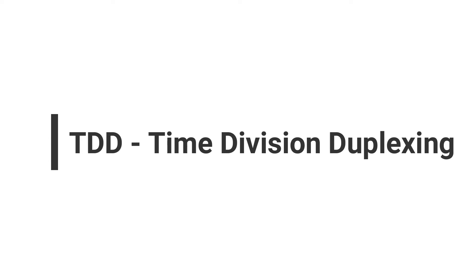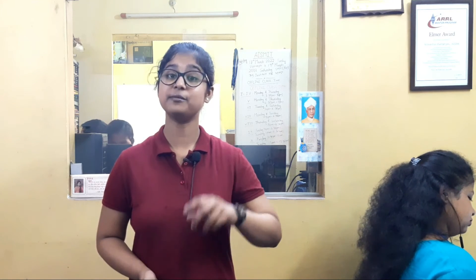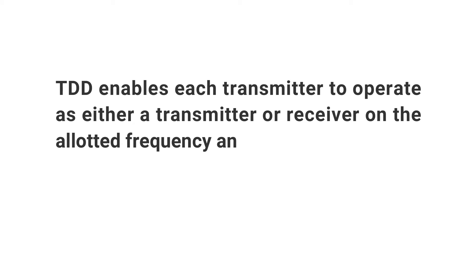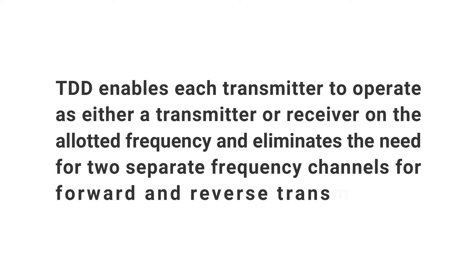TDD — Time Division Duplexing. In TDD, the splitting of channels is based on time slots. Unlike FDD, there is no need for two simplex channels and a duplexer at each end, so this reduces the complexity of the circuit. If the time split between the two channels is small, then there is simultaneous reception and transmission to the user. TDD enables each transmitter to operate as either a transmitter or a receiver on the allotted frequency, and eliminates the need for two separate frequency channels for the forward and reverse reception of data. Comparing the pros and cons of FDD and TDD, today most wireless technologies use TDD as it eliminates system complexity, and also a single band frequency is sufficient for transmission and reception of data.